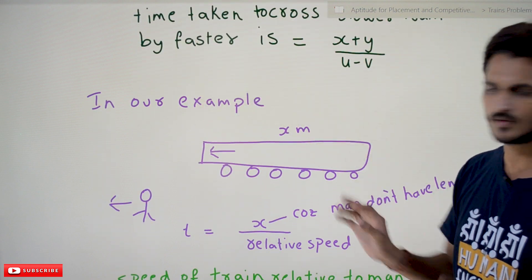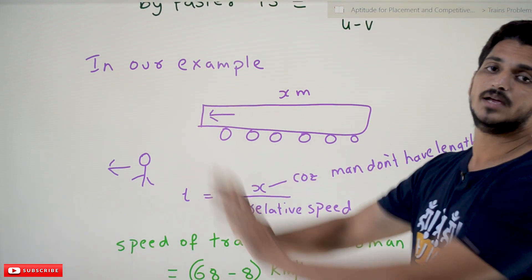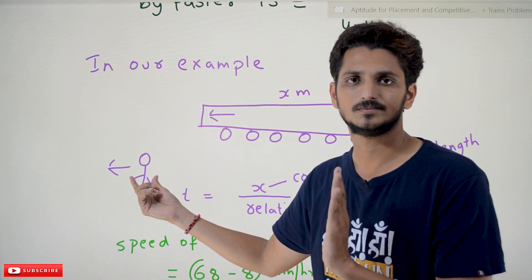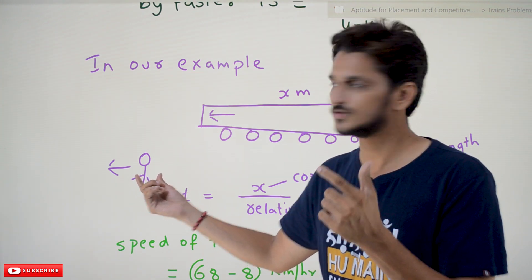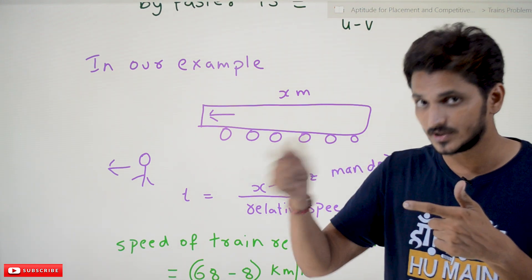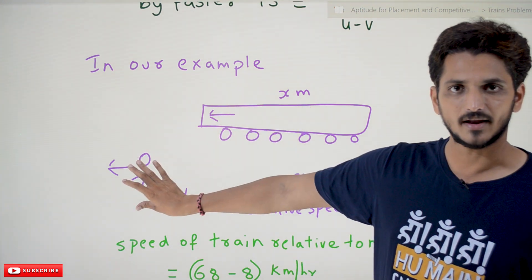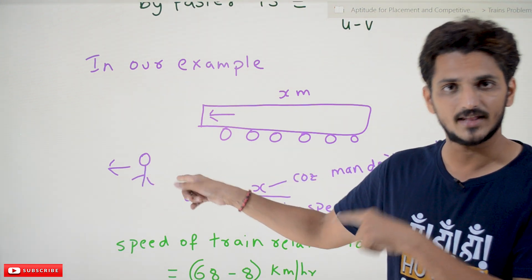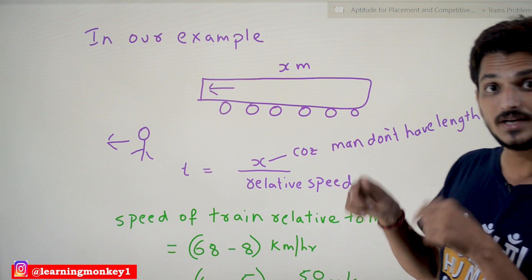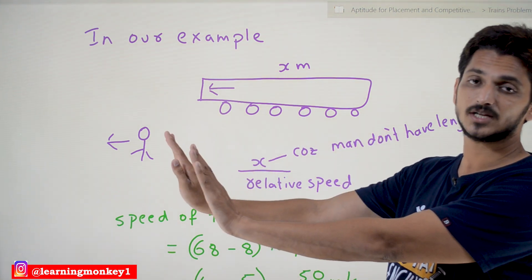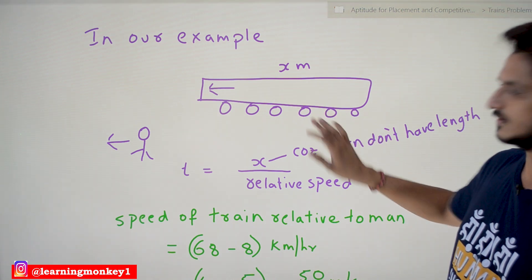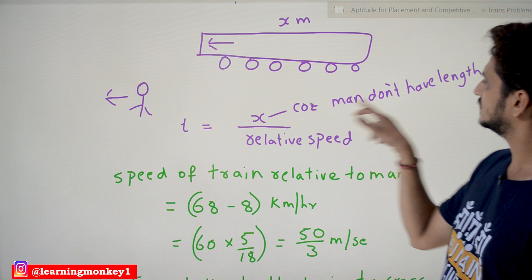Coming to our example, the train and the man are both moving in the same direction. The length of the train is x meters, but a man has no length, so it is zero. The distance is only x meters. This is the key point: if one object is a man who is moving, that object doesn't have a length. So time = distance / speed, where speed is the relative speed — subtraction of the two speeds — and distance is only x meters.